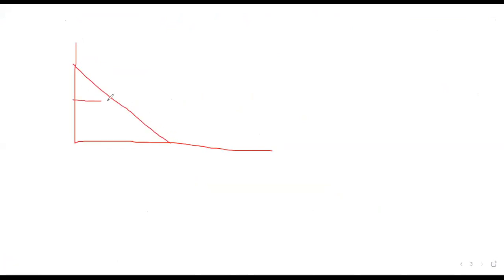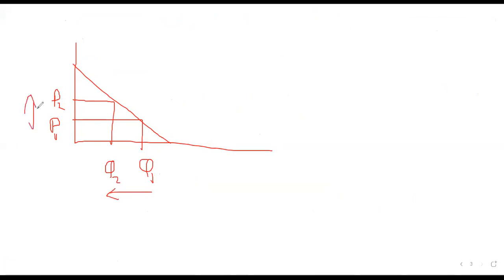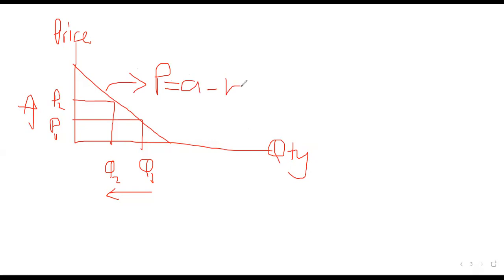Because of the law of demand, for any normal good, if the price increases from P1 to P2, the quantity demanded will decrease from Q1 to Q2. This is the law of demand — it has a negative relationship. The demand equation is usually given as P = A − BQ. This causes our elasticity to always be negative because there is an inverse relationship that exists.